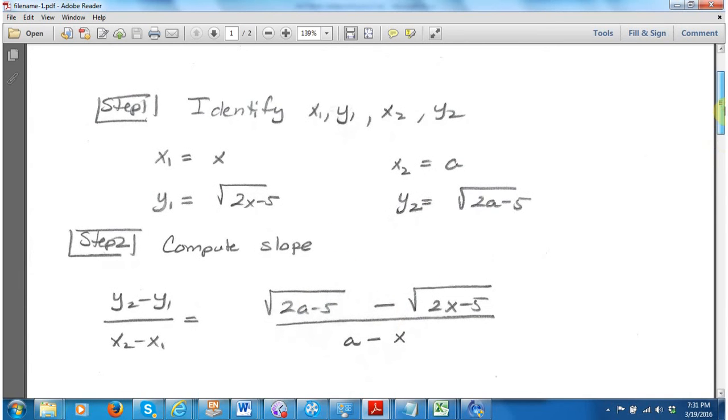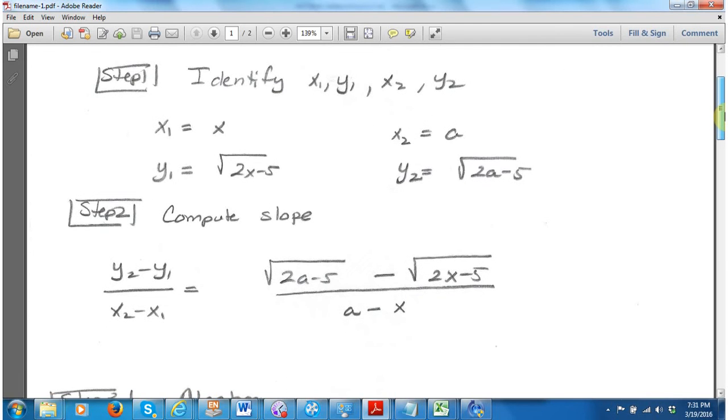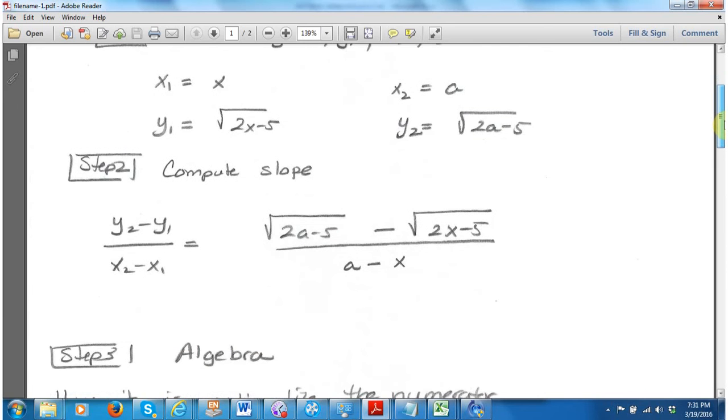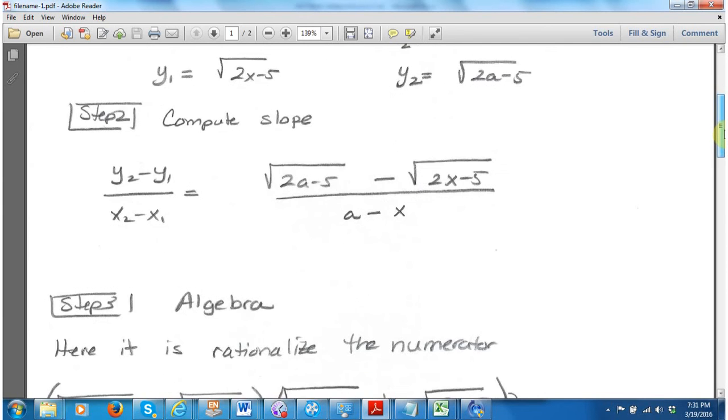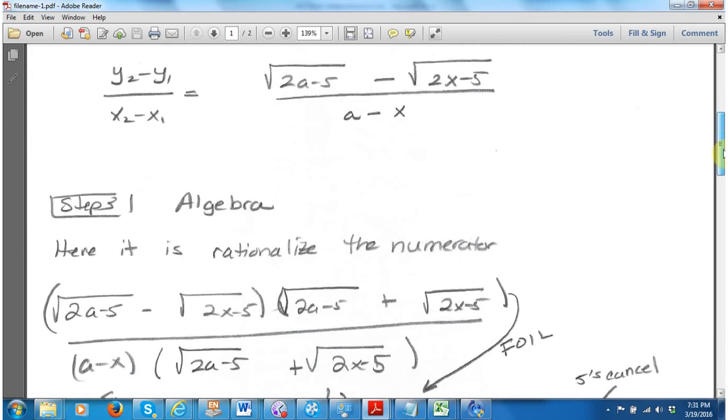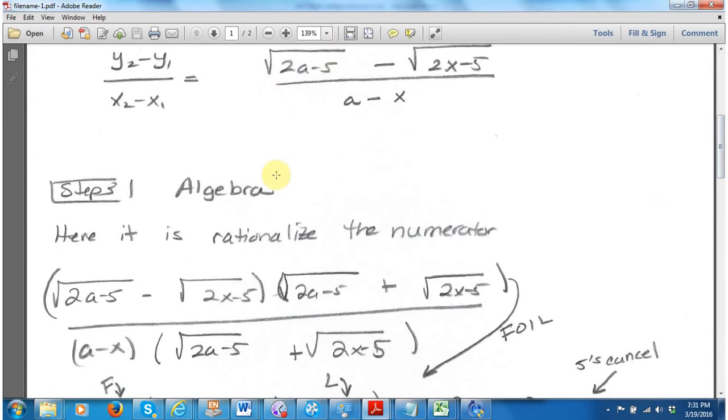Now this is more complicated than what we've had in the past. But we've seen stuff like this before. The trick is to do something called rationalize the numerator. So I'm going to multiply top and bottom by the conjugate of what's on top. So that's the square root of 2a minus 5 plus the square root of 2x minus 5. And that's done top and bottom.